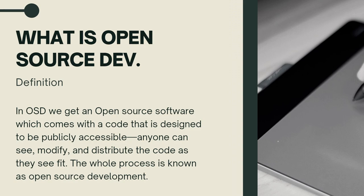We can start with a simple typical definition: in open source development, we get open source software which comes with code that is designed to be publicly accessible. Anyone can see, modify, and distribute the code as they see fit. The whole process is known as open source development. This is the technical definition mostly seen everywhere.